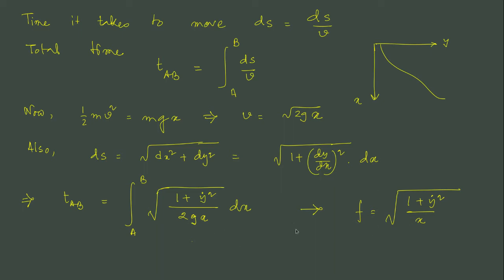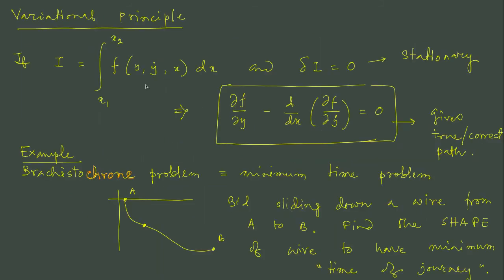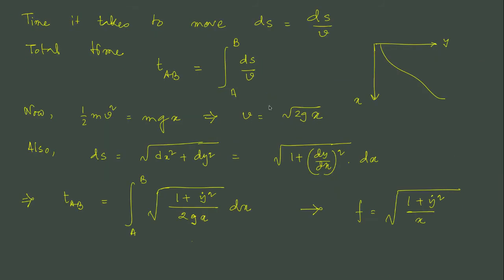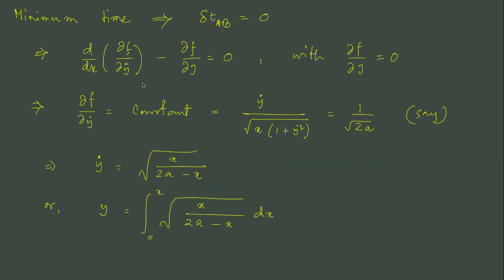Now we identify the function f of the earlier principle that it should be a function of y, y dot and x. We identify that function to be 1 plus y dot square divided by x and we are taking the square root of the whole.